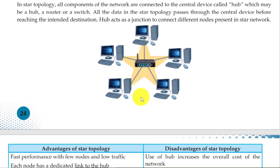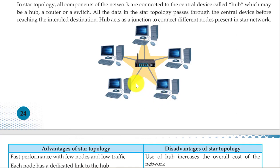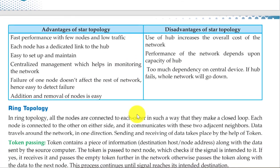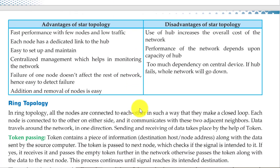Unlike bus topology where if the cable fails all nodes fail, in star topology failure of one node does not affect the others. Disadvantages: use of a hub increases the overall cost of the network. Performance depends upon the capacity of the hub. If the hub fails, the whole network goes down.